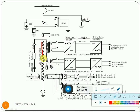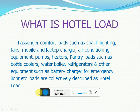Next, the supply from the main winding is stepped down and goes to the hotel load winding. This hotel load facility is available in all WAP5 locos and in some WAP7 locos. The supply will be given to the coaches. Hotel load — or HOG (Head-on Generation) — covers passenger coach loads such as coach lighting, mobile and laptop chargers, air conditioning, pumps, heaters, pantry load, refrigerators, and battery chargers.